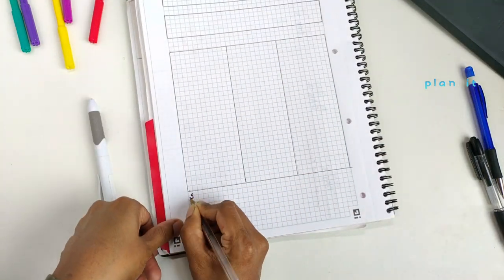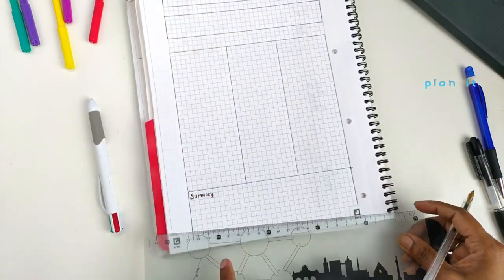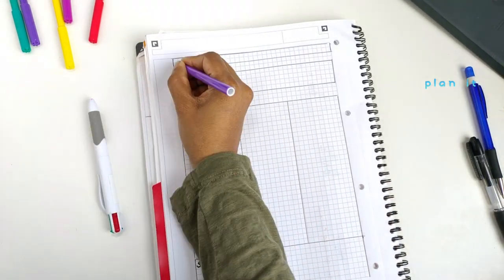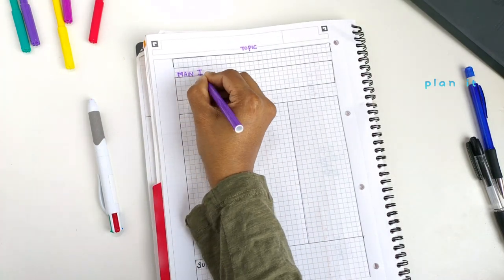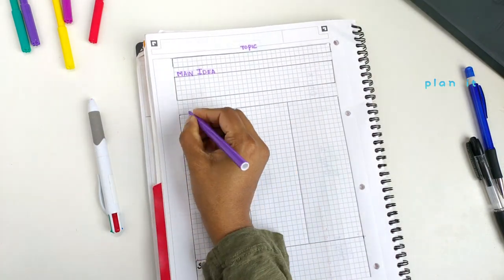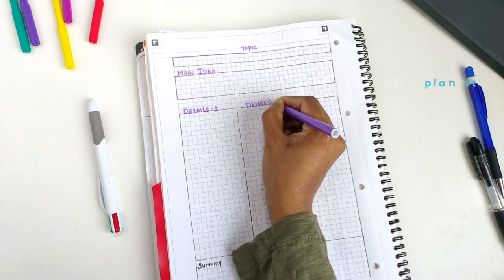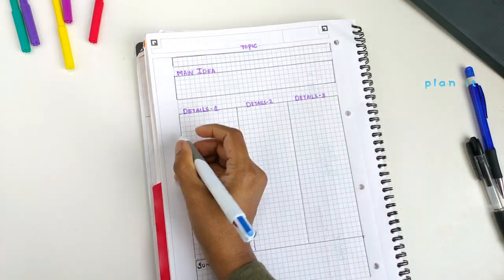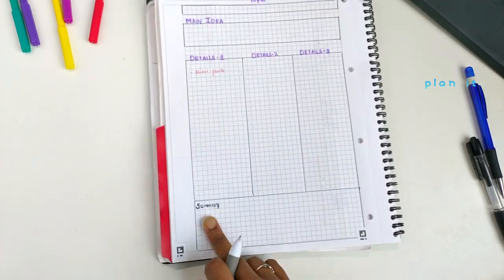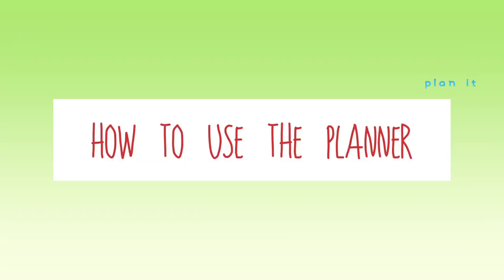Here is another page, which is the most important part of this learning system. You write the title and all the usual details, but this page is the summary planner of your topic. Now it's time to learn how to use this planner.